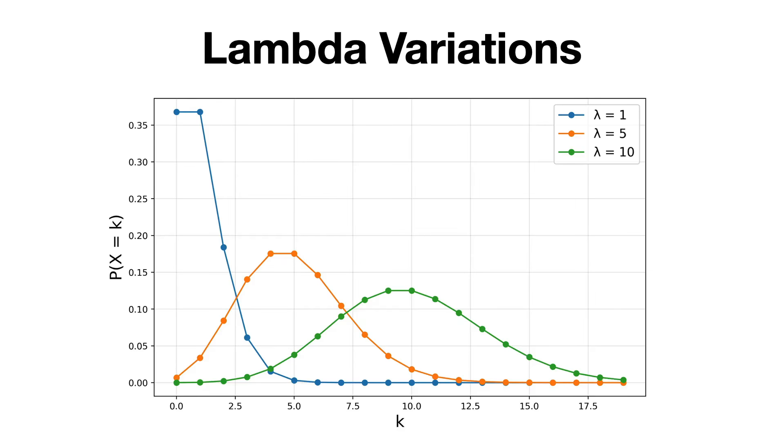For even larger values of lambda, say lambda equals 10, the Poisson distribution resembles a normal distribution, centered at around k equals 10 in this case. This is a manifestation of the central limit theorem, about which we'll probably talk in another video, where many distributions, including the Poisson, approximate a normal distribution when their mean is large.